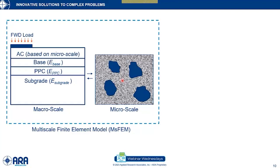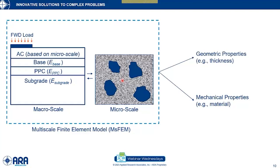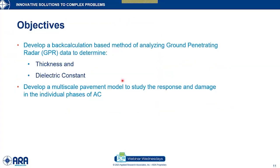To develop such a model, we will need geometric properties and mechanical properties, and that sets the tone for today's webinar. First, I will demonstrate a methodology to determine the thickness and dielectric constant from back calculation of GPR data based on finite difference time domain and machine learning. Once we have the thickness and dielectric constant, we can proceed with development of a multi-scale pavement model to study the response and damage in individual phases of asphalt concrete.